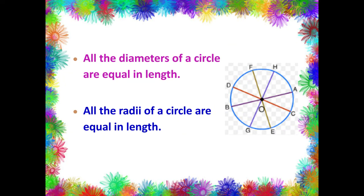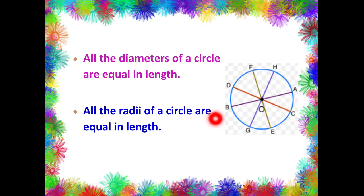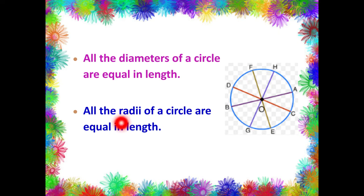Now let us learn about some properties of radii and diameter. As we have seen, OF, OH, OA, OC, OE, OG, OB, and OD are all radii, so all the radii of a circle are equal in length. Similarly, the diameters DC, HG, AB, and FE are all equal in length. The word 'radii' is the plural of radius — when we have more than one radius, we call them radii.